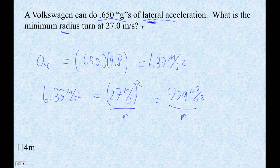And then what I'm going to do is multiply both sides by R and put the R up there, divide both sides by 6.37, so I'll end up being R is this divided by 6.37. And I get 114.44 meters.